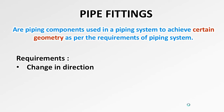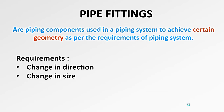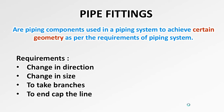The specific requirements are: first, change in direction — directional changes in piping. Second, change in size from a higher size to a lower size. Third, to take branches — there will be a lot of branches in one connection. Fourth, to end cap the line, to arrest and end the line. And fifth, to join different lines. These are the requirements where piping components play a vital role.